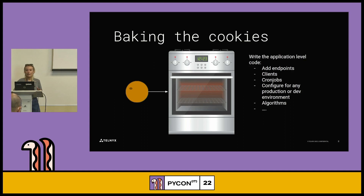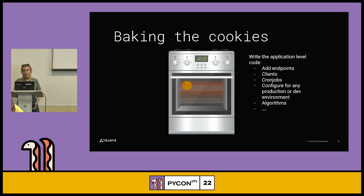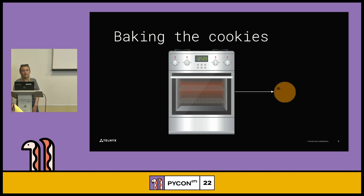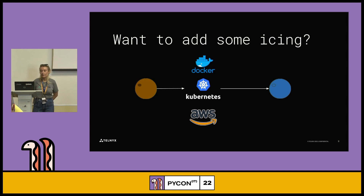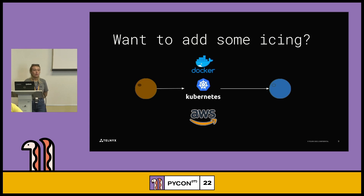Baking the cookies means writing endpoints, clients, cron jobs — whatever you need for your service or application. Configure it for dev or any environment you need. This is just writing the code. And you get a slightly more developed service — it's running and does what it does. For adding extras like Docker and Kubernetes, a lot of the time these come with the cookie cutter itself. You don't want to write this code every time you create a service. It's not ideal, and it can lead to inconsistencies and bugs very easily.